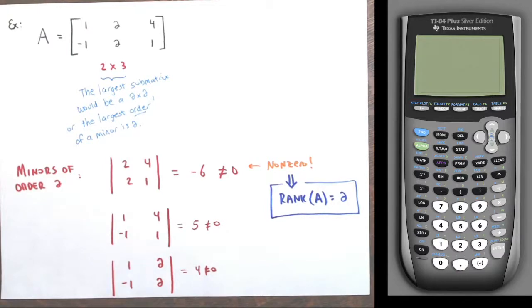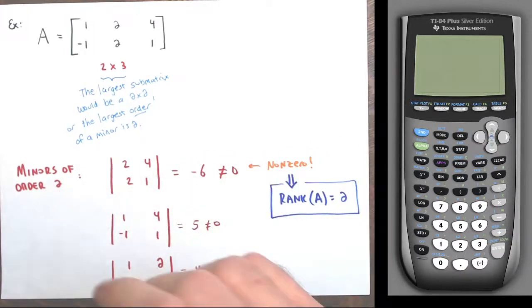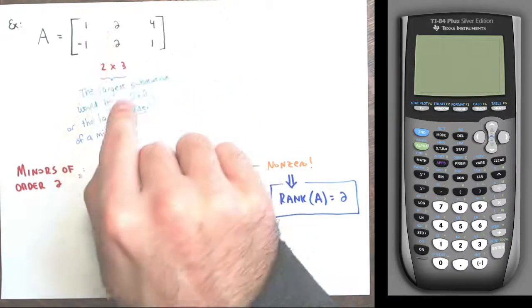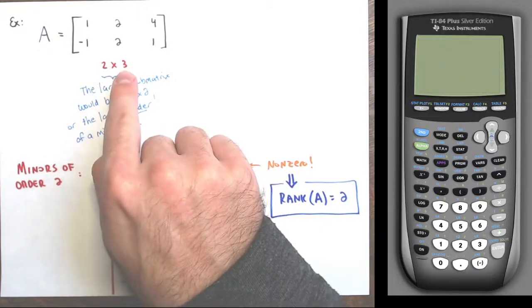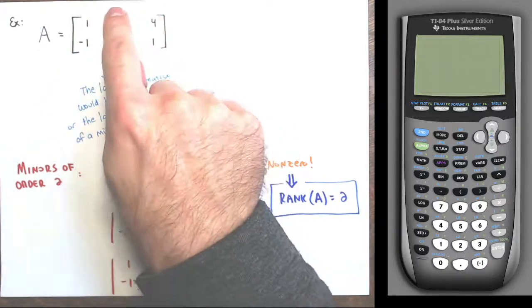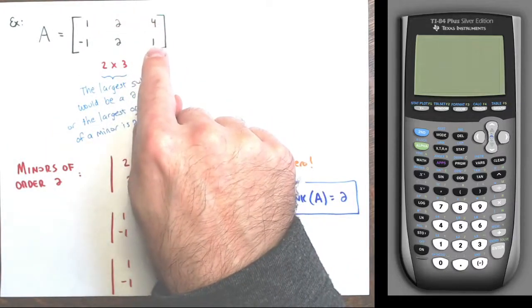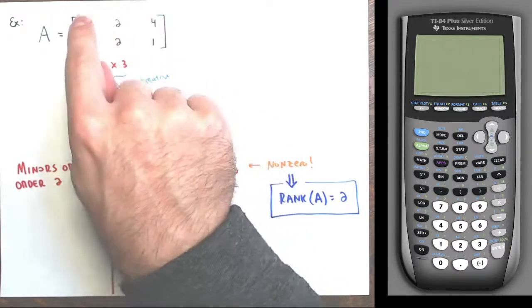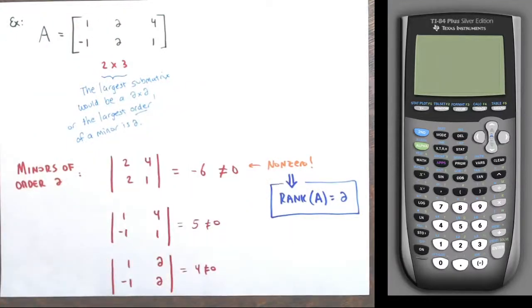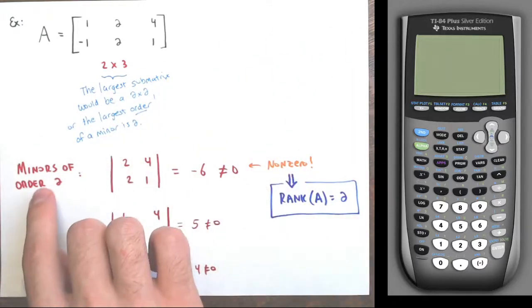You could also ask about minors of order one — to make a one by one submatrix from a two by three, you'd remove one row and two columns, so basically each entry forms its own one by one minor. But we don't need to go that far because we already found a non-zero minor of order two.